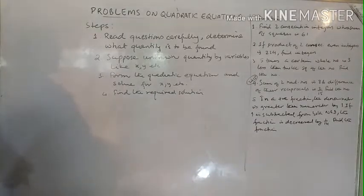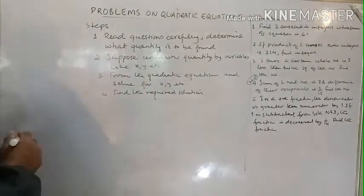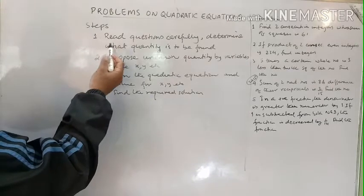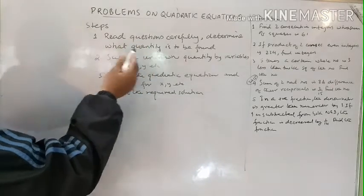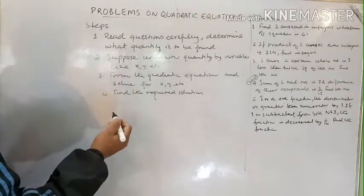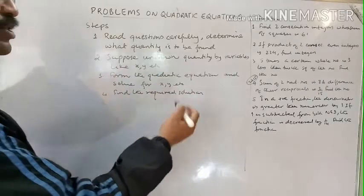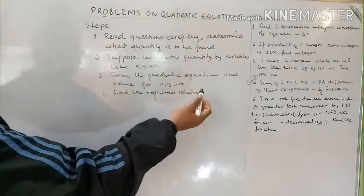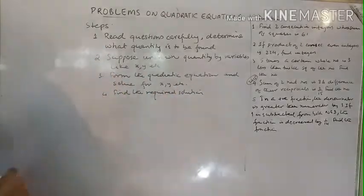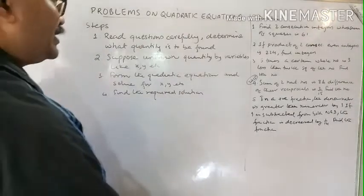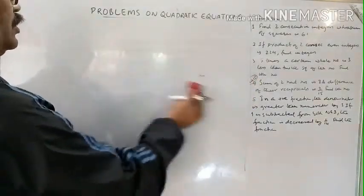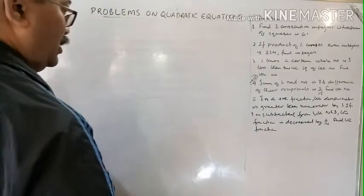After finding the values of x and y, refer back to the question to write the answer using those values. So the four steps are: read carefully, determine what to find, suppose the quantity as x, form the quadratic equation using the given condition and solve for x, then write the solution.